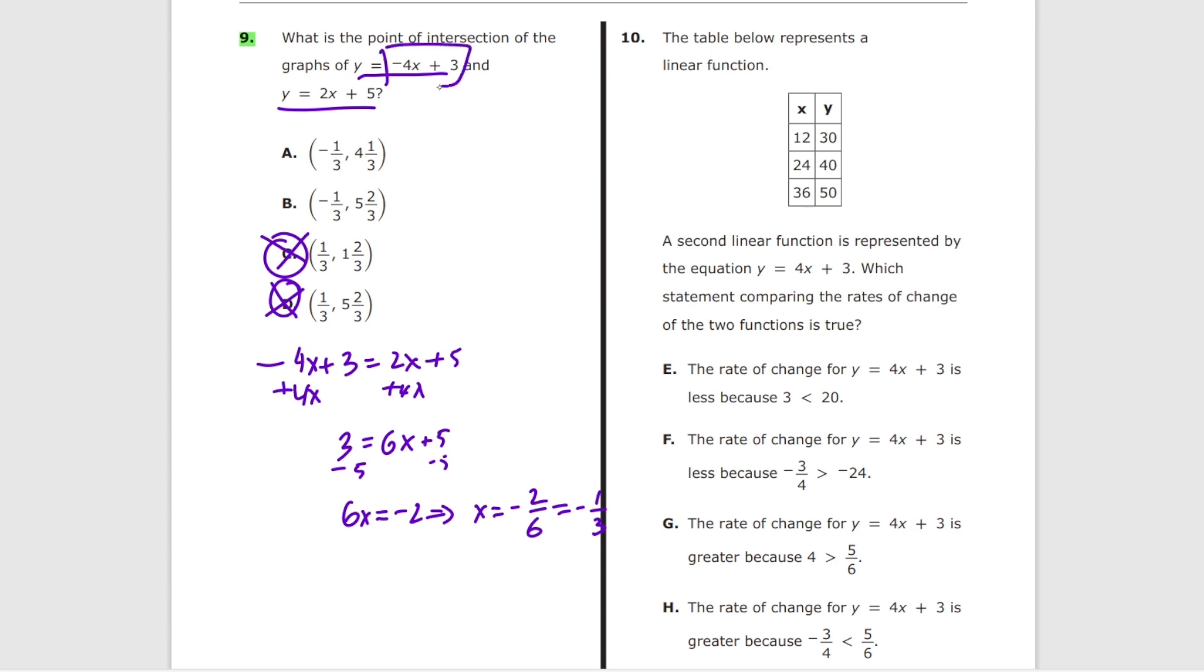All I need to do is just plug it back in. Let me plug it into the first equation here. y equals minus 4 times negative 1 third plus 3. Minus times minus equals plus. So y equals positive 4 thirds plus 3 which equals, let me do the common denominator first, 1 and 1 third plus 3 which equals 4 and 1 third and the answer is A.